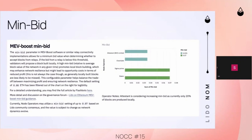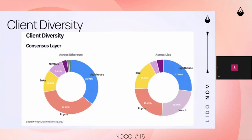Currently, there are only four node operators with a min bid setting that is not zero; all the other ones are currently at zero. They've been filtered out for visibility.